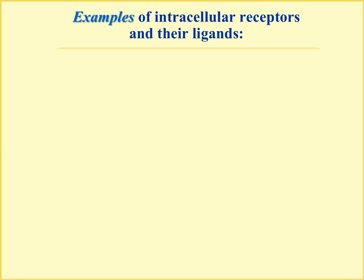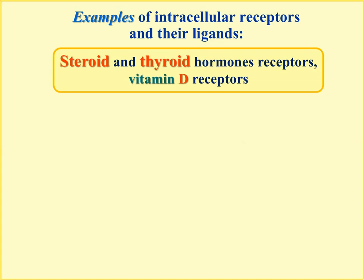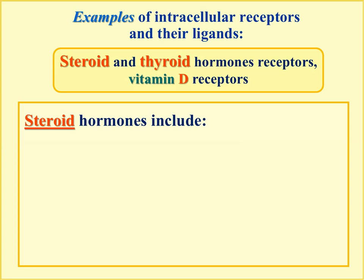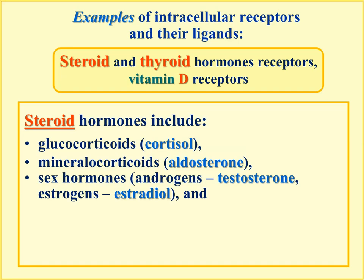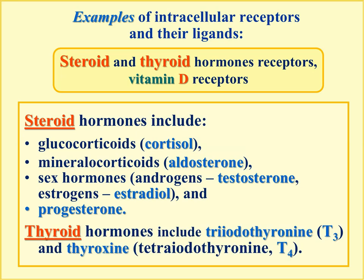Examples of intracellular receptor ligands include steroid hormones and vitamin D. The steroid hormones include glucocorticoids (mainly cortisol, plus corticosterone), mineralocorticoids (mainly aldosterone), and sex hormones including androgens (main representative testosterone) and estrogens (main representatives estradiol and progesterone). All these hormones predominantly use cytosolic receptors. Thyroid hormones — triiodothyronine (T3) and thyroxine or tetraiodothyronine (T4) — use nuclear receptors.